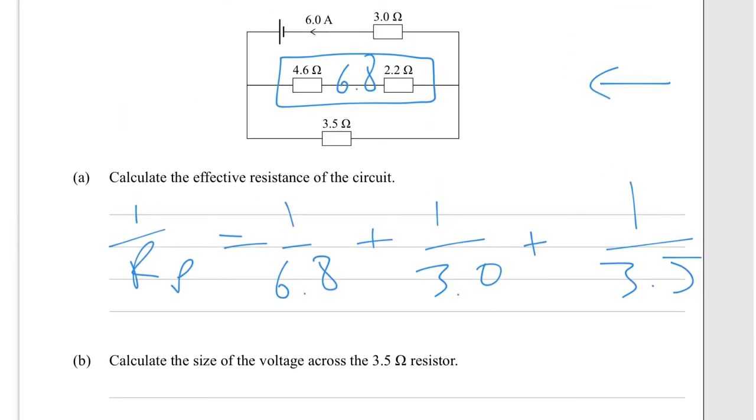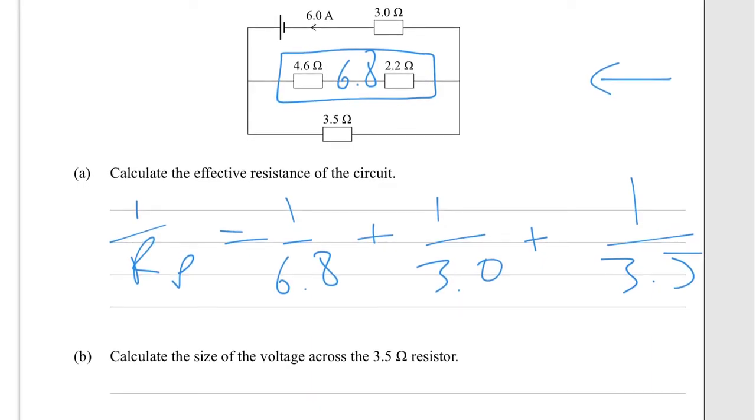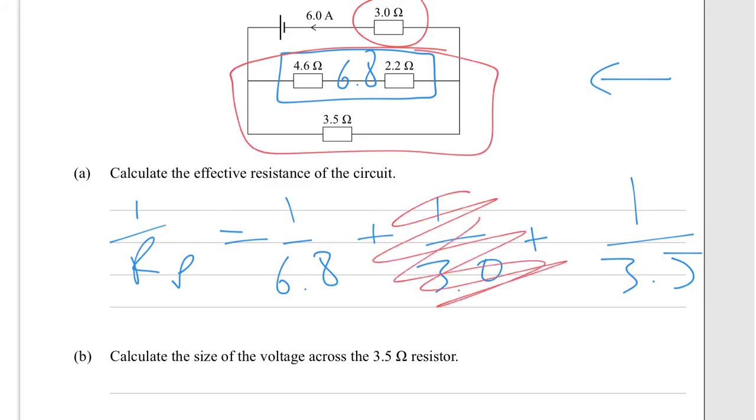I have to adjust my working from above, because that is in series with this part. So you have to work out 6.8 over 3.5 once you have R_P. Rearrange from that - you have to add that to the 3.0. Go back and check that if you're not sure.